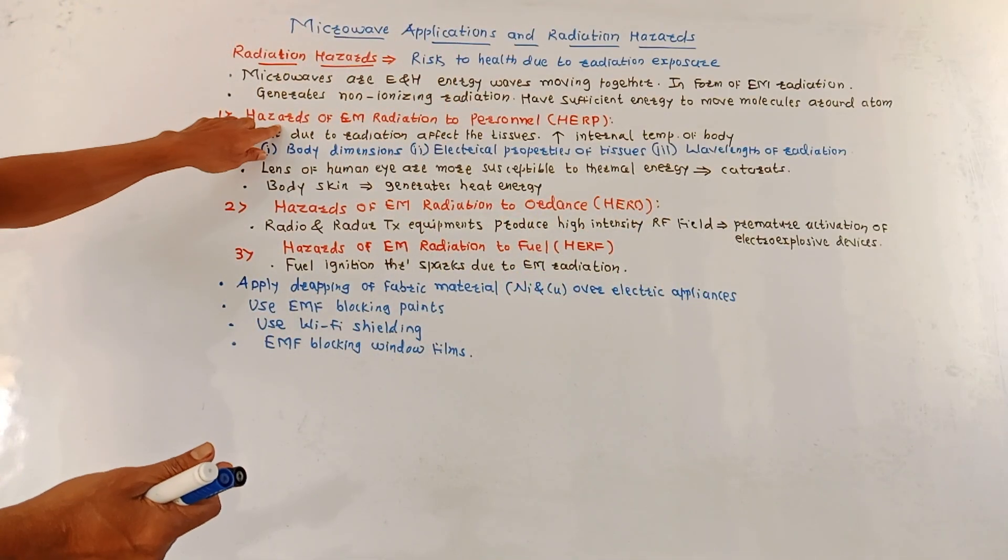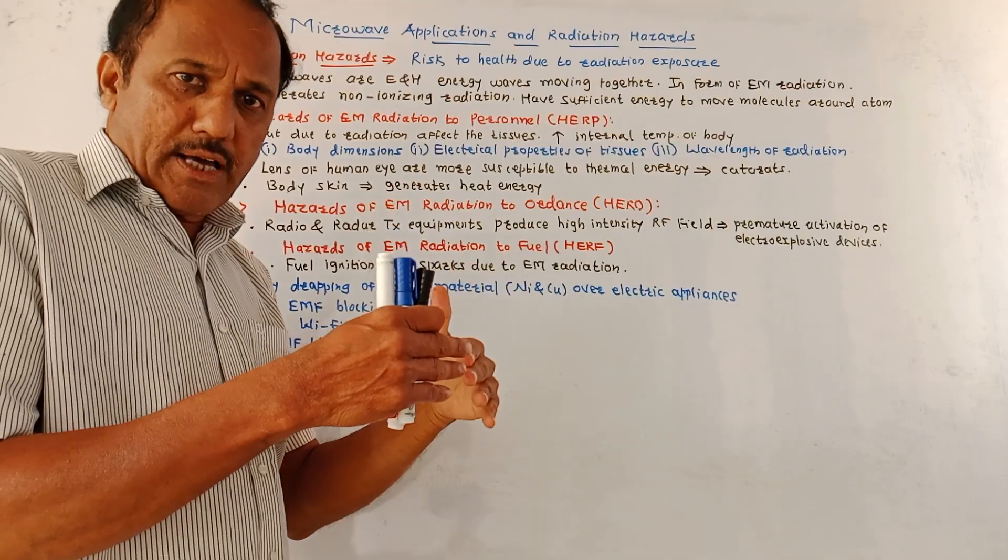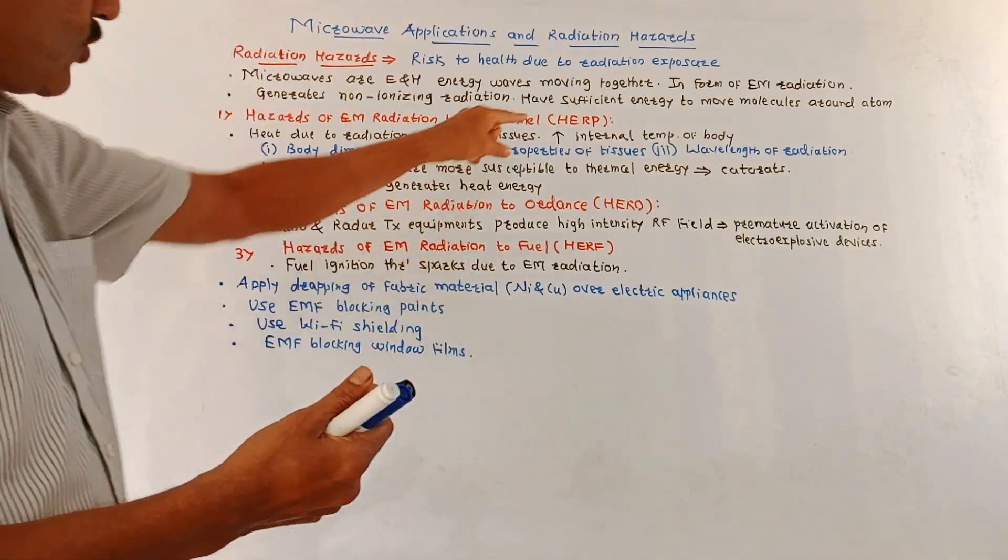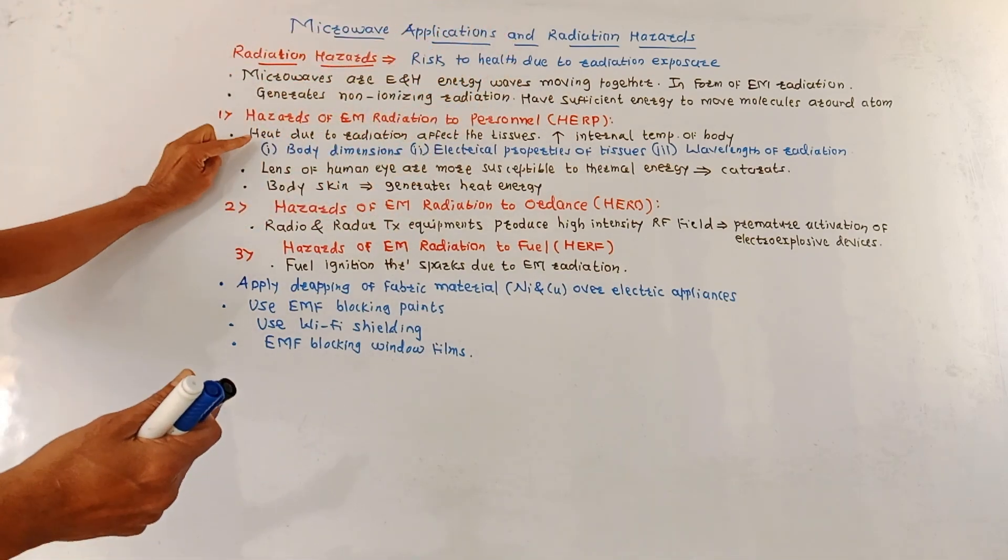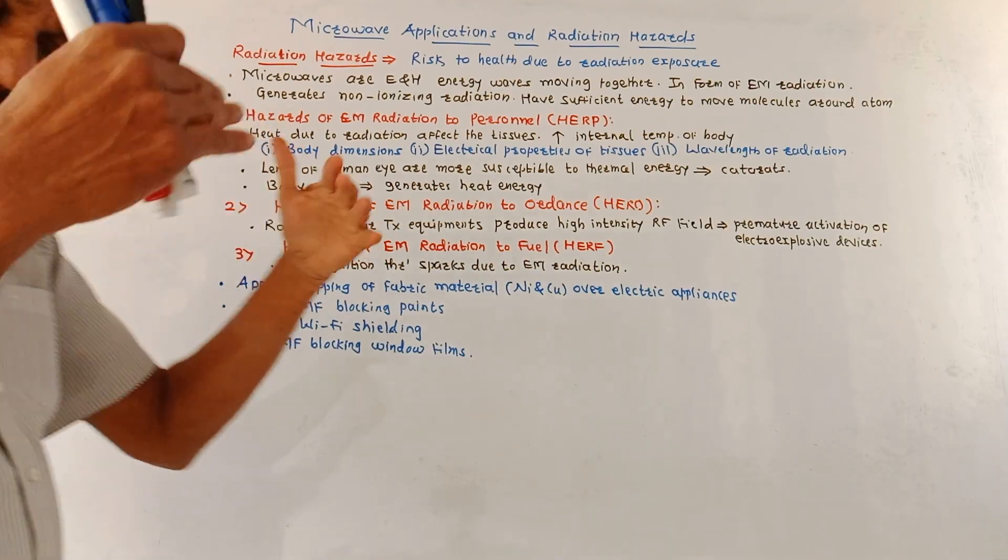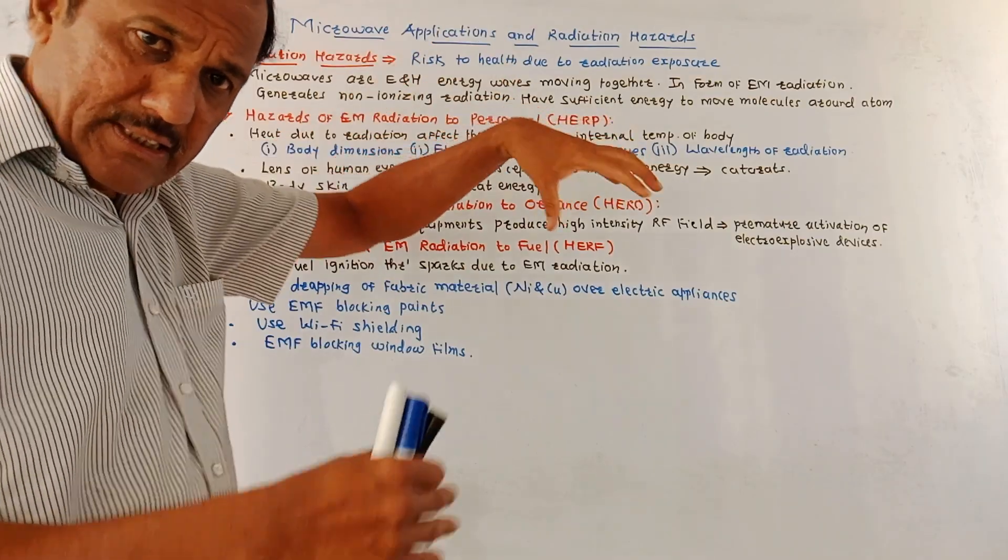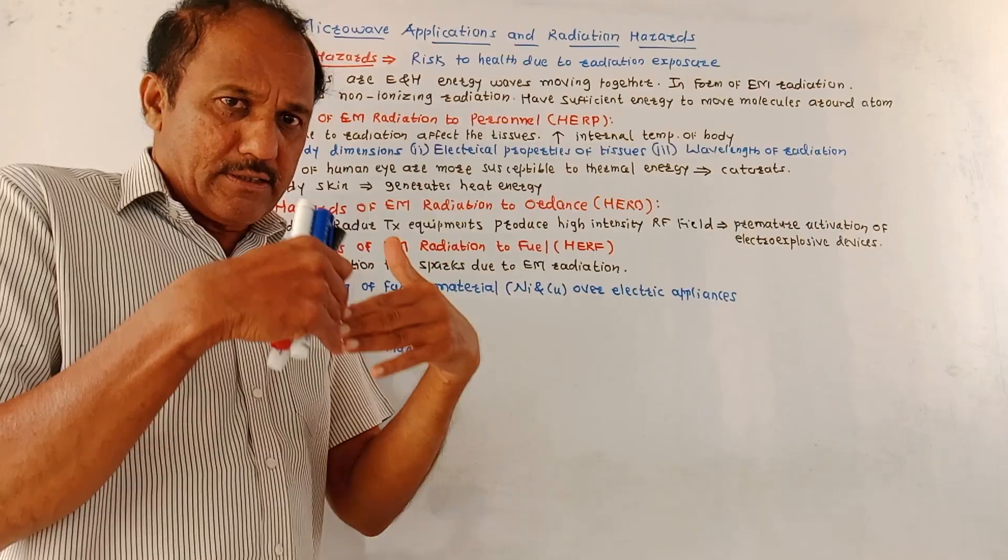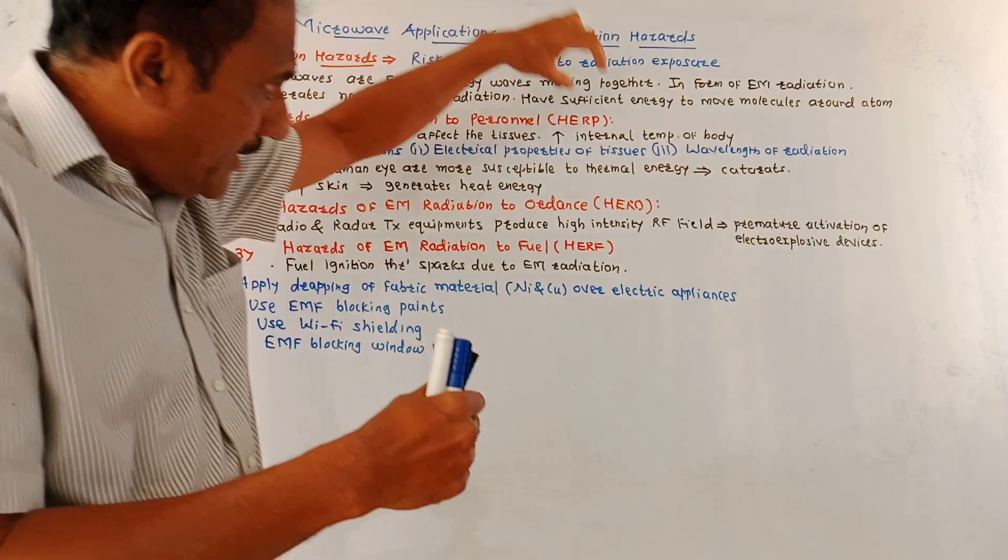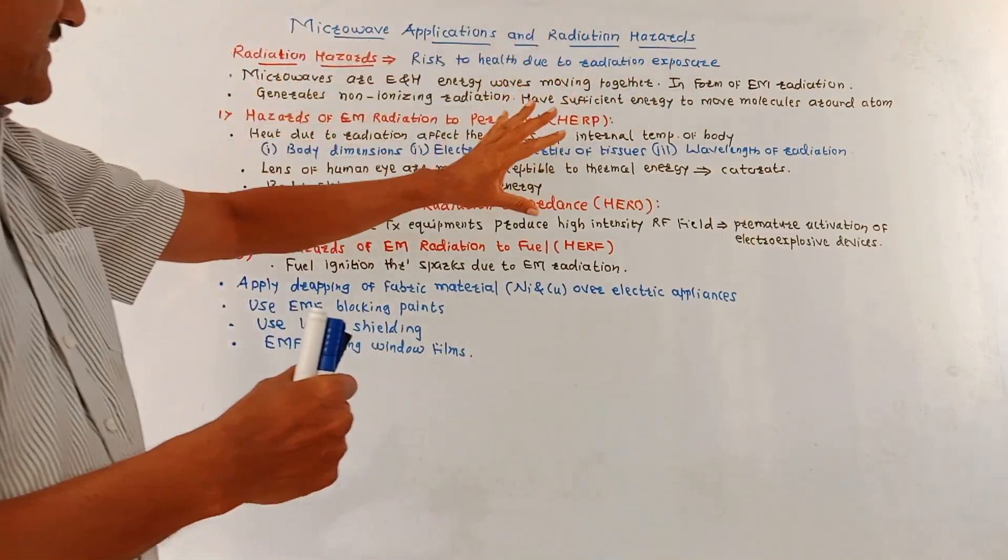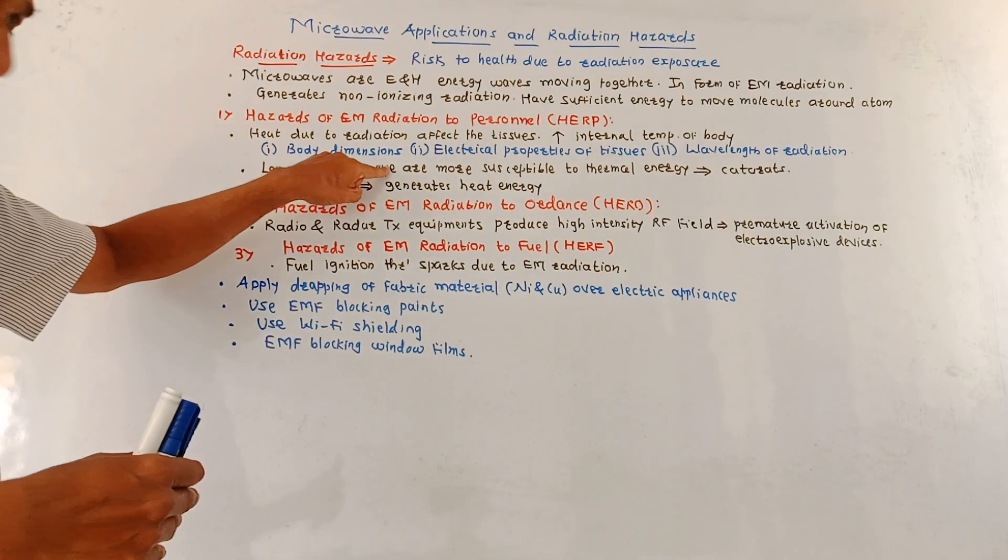Different types of hazards: First is hazards of EM radiation to the personnel, abbreviated as HERP. Heat of the radiation - basically radiation produces heat. This heat affects the tissues. Whenever the human is in the vicinity, nearby the radiation, then the internal temperature of the body gets increased because of the radiation falling on the tissues. This radiation depends on the dimensions of the body, the electrical properties of the tissues, as well as the wavelength of the radiation.